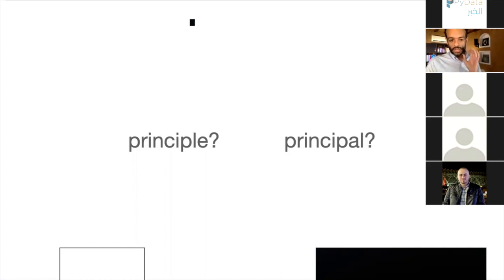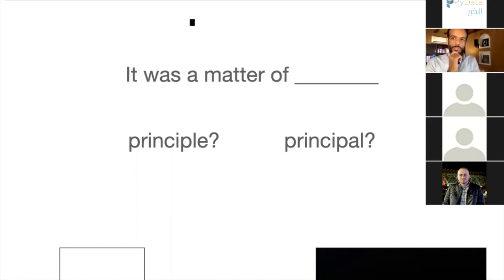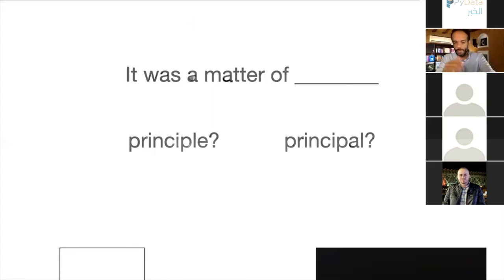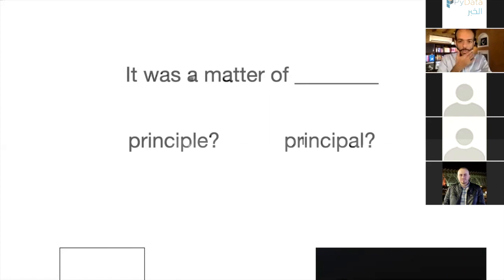What if it was preceded by five words — 'it was a matter of' — something? That's where language models can really help us, telling us the probability of one word versus another coming next. With that, I'll switch to a notebook that I'll share with you, where we can start to see how Echo can be helpful in this case.